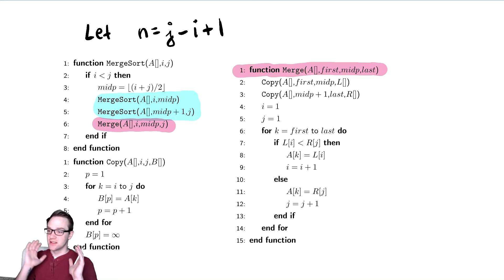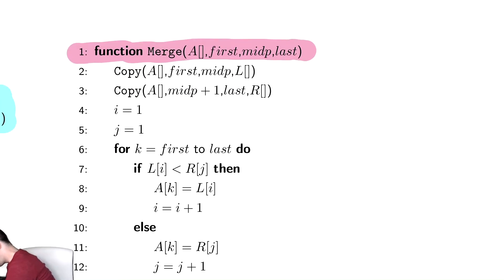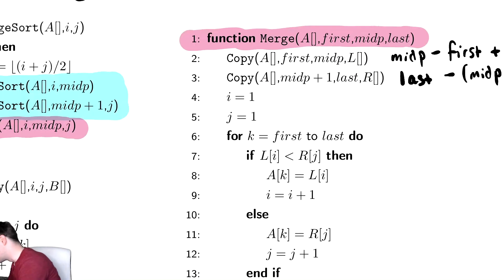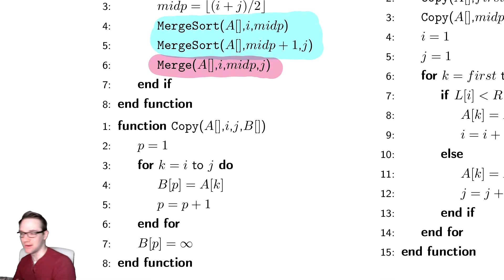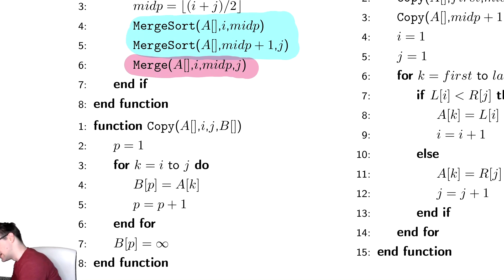Copy takes time proportional to whatever we're copying. All it does is copy things from A into B. So this first thing here will take midp minus first plus one. Similarly, we'll have last minus midp plus one plus one. That's how many times each of those iterates. If you look at the code, it just runs i to j.